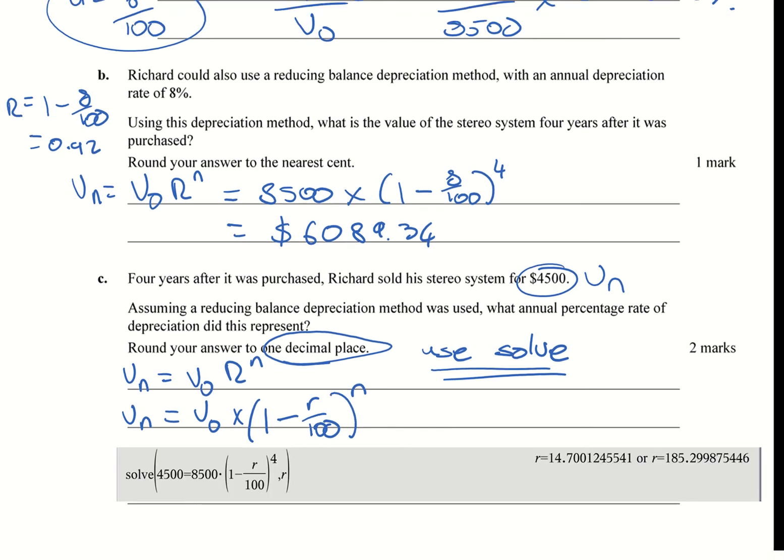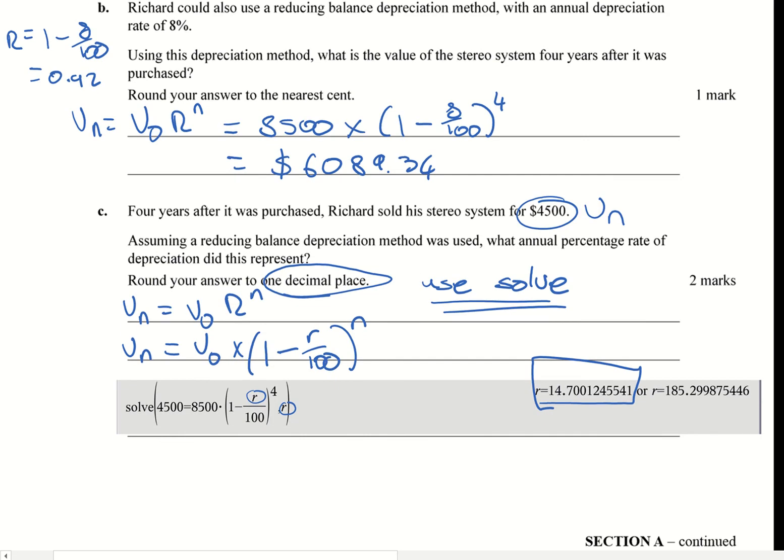So on your calculator put solve, put the bracket around, put four and a half thousand equals, as it's shown here, you're going to put R at this point here, and you're going to put comma R. What you'll get is these two answers. In this case you're going to pick, it doesn't make sense it's going to be 185 percent as a percentage rate, so in this case you're going to select this one here. So in this case R is going to be R equals 14.7 percent. Remember it was one decimal place. All right, and that is it for Question 8.